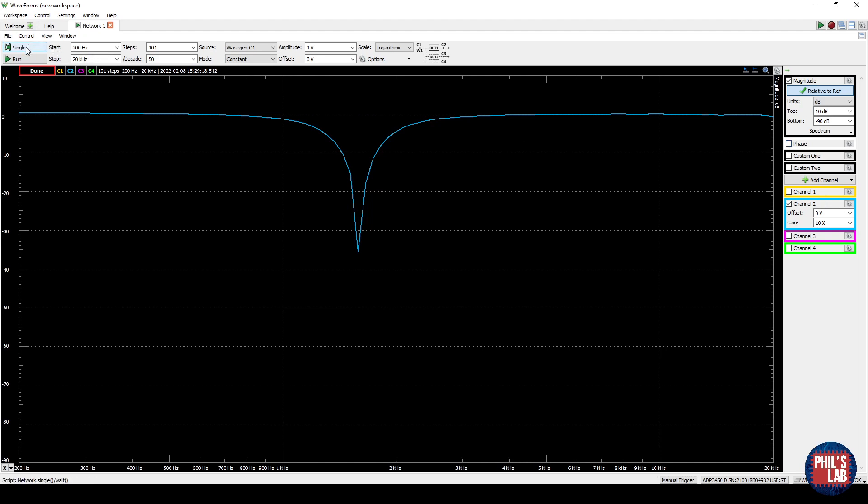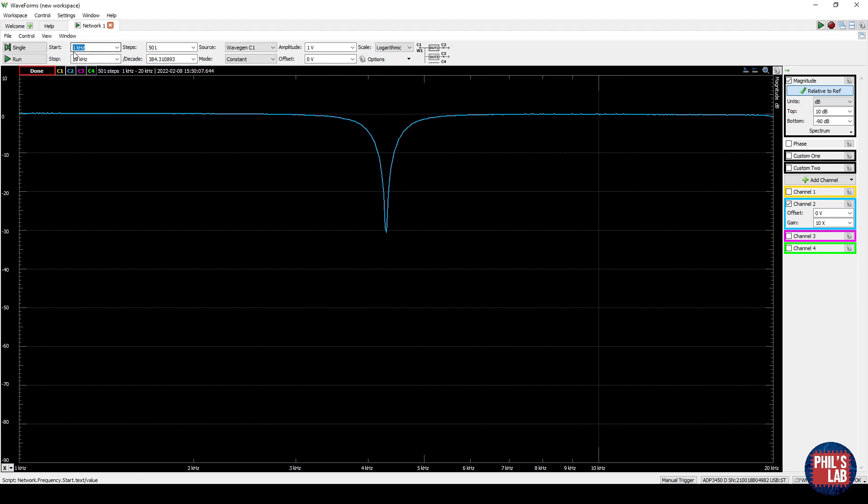I'm just going to center the potentiometer so my notch width. So I've changed my start frequency to 1kHz, stop frequency to 20kHz because my notch is somewhere between 4 and 5kHz according to these potentiometer settings.